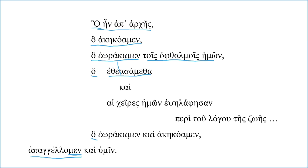The older English is 'beheld' for theaomai — it's the idea of gazing at something, learning as you reflect. Horao is more just to see something. So I don't know how you want to translate that — 'what we have beheld,' 'what we have gazed upon,' something like that. So what we have beheld, and now you get another part of the same relative clause: our hands have touched. There's no expressed subject here, but there is an expressed subject there. So: what we have seen and our hands have touched.